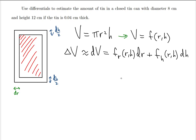Now that we have that, we can substitute in the numbers. First, let's find the partial derivatives. The partial derivative with respect to r: partial differentiation treats h as a constant, just like pi, so there's no product rule involved. Taking the derivative of r² gives 2r, so we get 2πrh·dr. Then the partial derivative with respect to h: r is treated as a constant, and the derivative of h is 1, so we get πr²·dh.